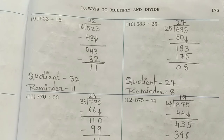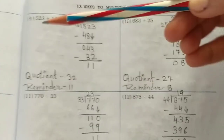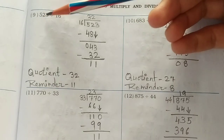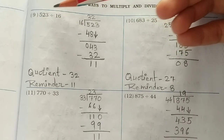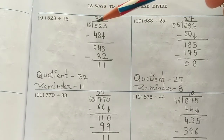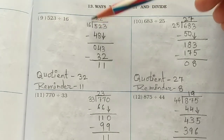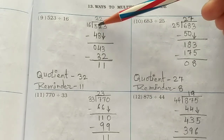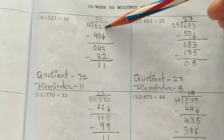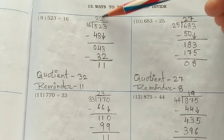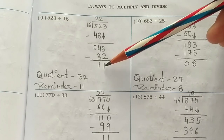Now come to page number 175. Question number 9: 523 divided by 16. Working through this: 16 twos are 32, remainder 4. Bring down the next digit. 16 twos are 32, and the remainder number is 11. Your answer is 32.